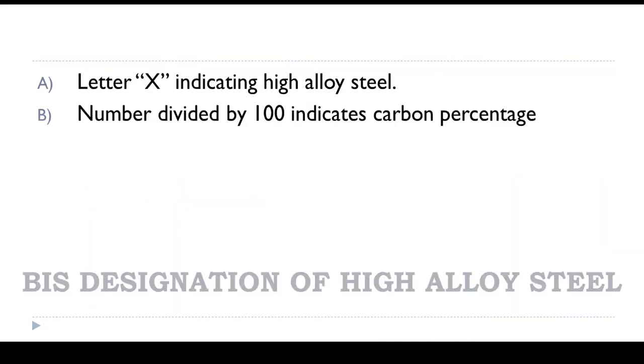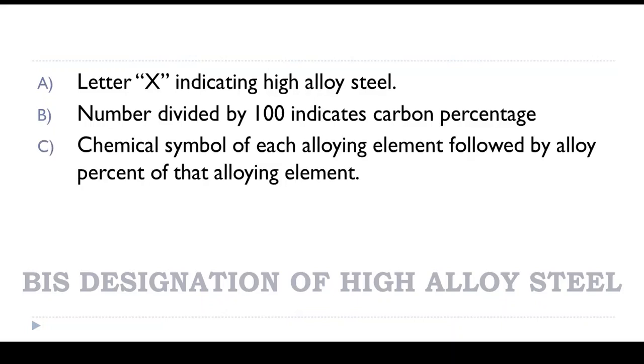High alloy steel is designated by letter X. Number divided by 100 indicates carbon percentage. And after the chemical symbol, whatever is the number, that much is the alloying element percent.